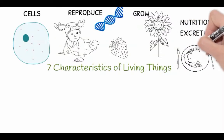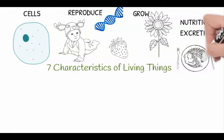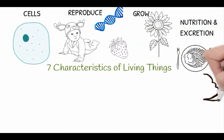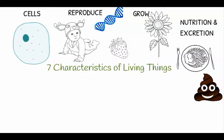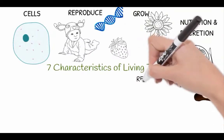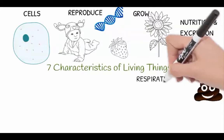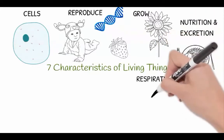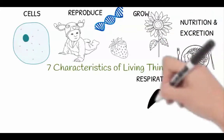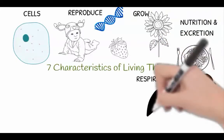All living things need to have an intake of nutrients and to be able to get rid of waste. Nutrient intake occurs in different ways — as humans we eat food, while plants draw in nutrients from the soil.